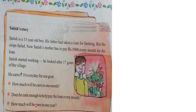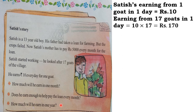How much will he earn in 1 year? For 1 month he is earning a certain amount — multiply that by 12 months. In 1 year how many months are there? 12. So by multiplying that amount by 12, we will get how much he will earn in 1 year.